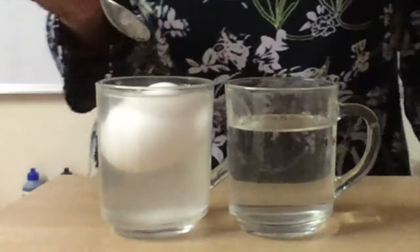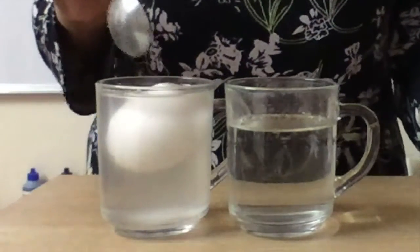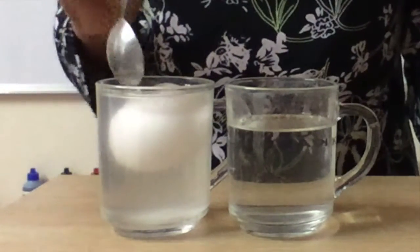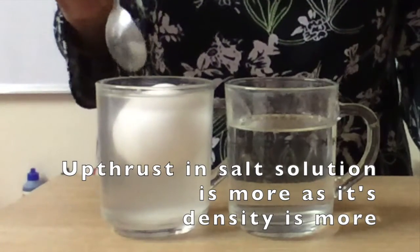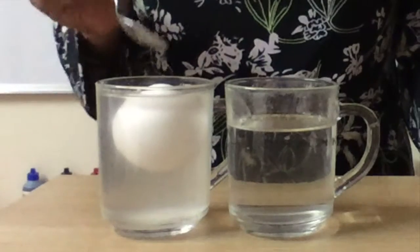And so the density of the egg has become lesser than the density of the liquid. And also understand that the upthrust provided is more in salt solution because its density is more and hence the egg floats.